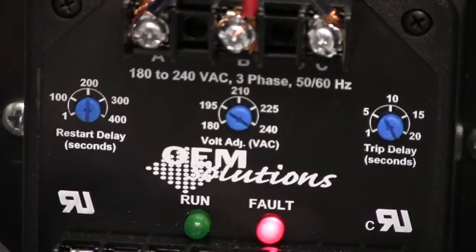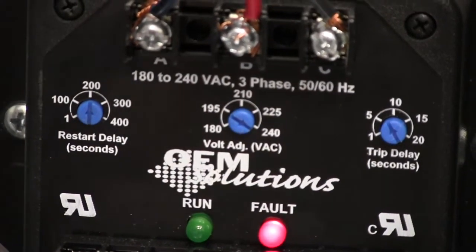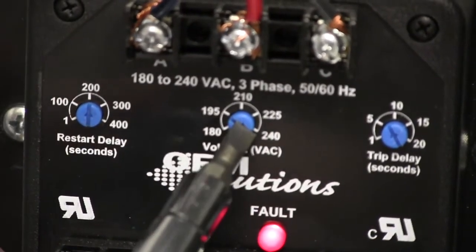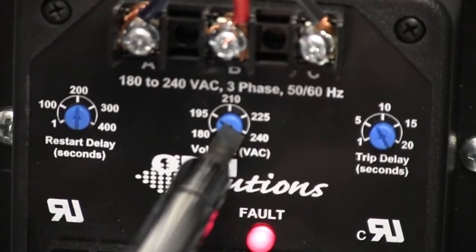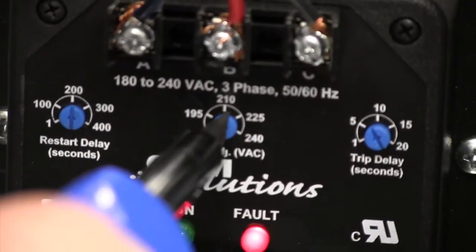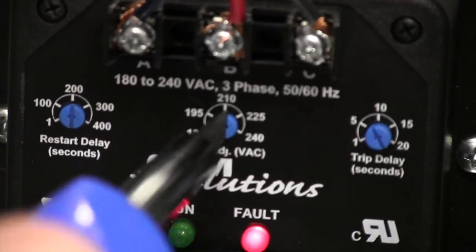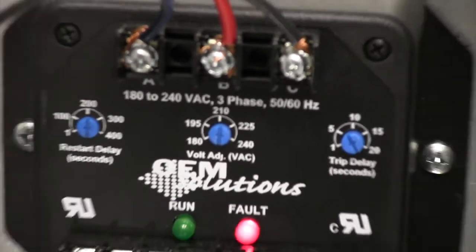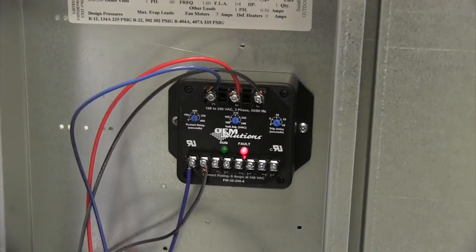If you have the fault light indicated on your phase monitor, the first thing that you want to check is your voltage adjustment. You can see here we're set at 240, but we measured our incoming voltage at 210, so I'm going to turn that to the 210 set point, and now our phase voltage adjustment is lined up with the incoming phase voltage.